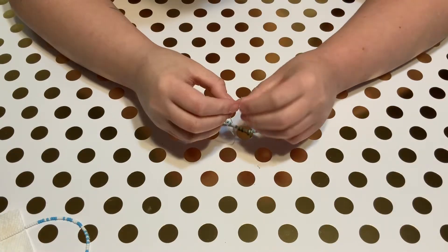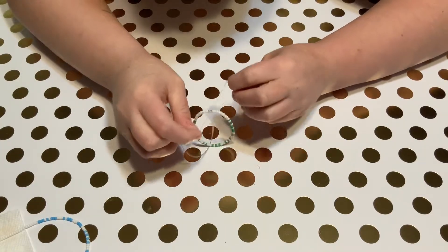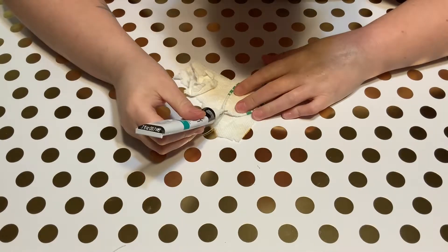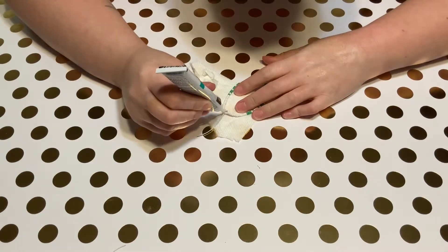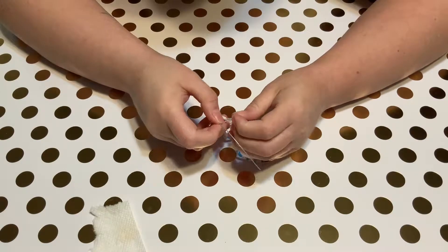Once the glue has had time to dry in my bracelet, I tie the two ends together to form the bracelet. I then glue the final knot to secure it in place. While I let that dry, I knot and glue my second bracelet.